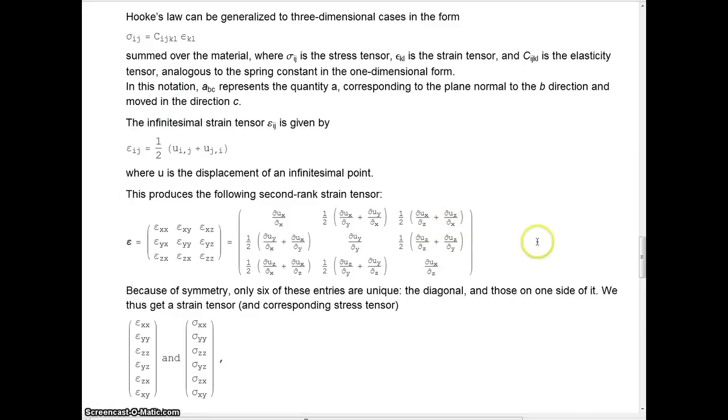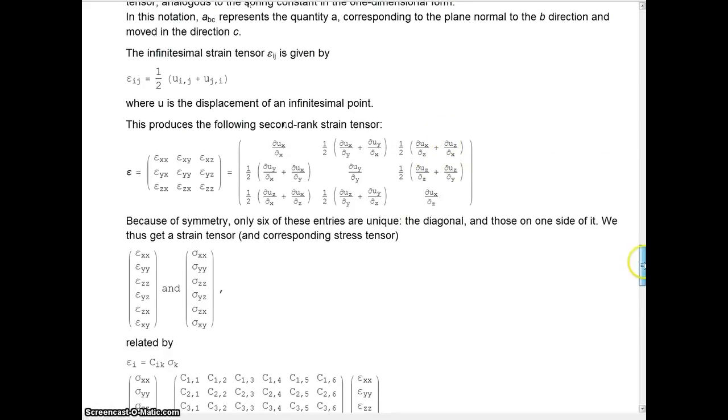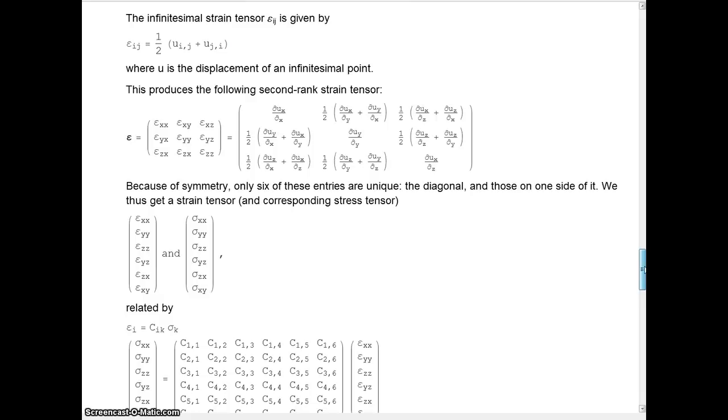But the coolest part is that only six of these entries are unique, right? Because this is the same as that, that's the same as that, and that is the same as that. So, what we can do is we can just break it down into these six unique things. And then here's our second-rank tensor, like I said before, of our elasticity.